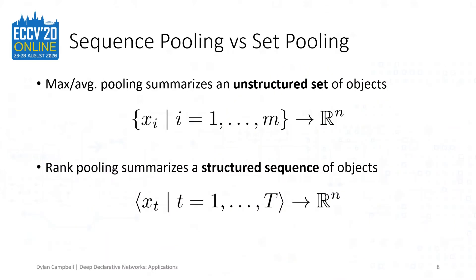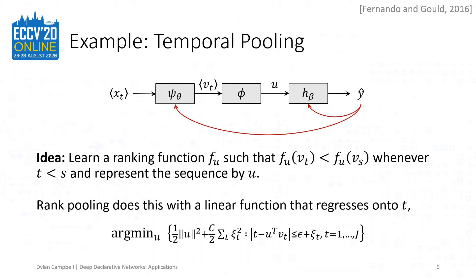Another choice for altering the pooling operation that a declarative approach admits is sequence pooling, which summarizes a structured sequence of objects. Here we have an application of sequence pooling across the time dimension, known as rank pooling, which has been used for video classification. Here, psi is an element-wise transformation, phi is a temporal pooling function, and h is a classifier. Parameters theta and beta are to be learned jointly. Rank pooling is efficiently solved using support vector regression, summarizing the dynamics of a video sequence in a single vector. For end-to-end learning, we require a way to backpropagate through the temporal pooling layer, which is possible if this is implemented as a declarative layer.